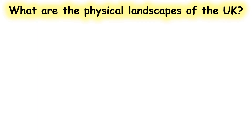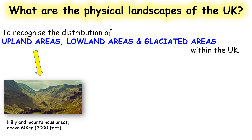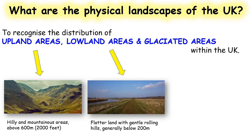This session is on physical landscapes of the UK. Physical means natural — nothing to do with humans at all. We're going to be looking at three of them: upland areas, which are the hilly and mountainous areas (many consider 600 meters to be the difference between a hill and a mountain, so anything above 600 meters is a mountain), and lowland areas, which are the flatter areas generally below 200 meters high.